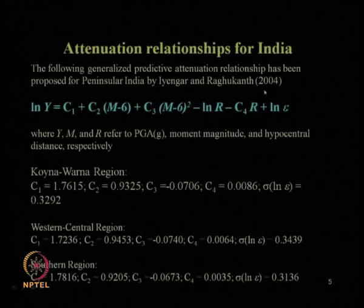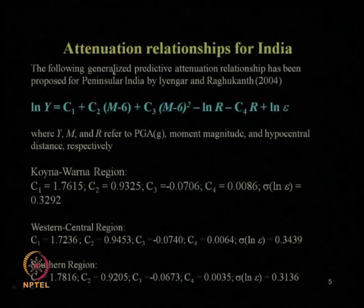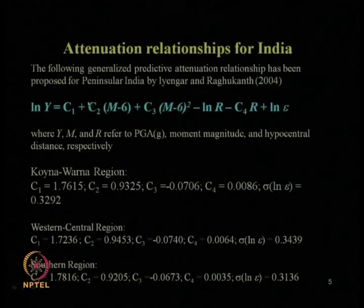We also discussed the attenuation relationship proposed by Iyengar and Raghukanth in 2004 — work done by Professor Iyengar at IISc Bangalore with his PhD student Dr. Raghukanth, who is now faculty at IIT Madras. They developed the attenuation relationship for peninsular India. If somebody wants to do earthquake-related design in peninsular India, they must use this equation, not the Himalayan, northeast, or Californian attenuation relationships.